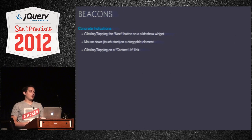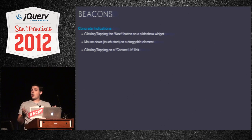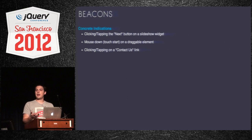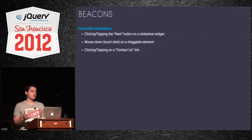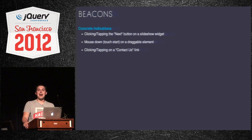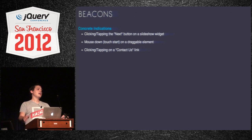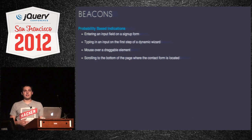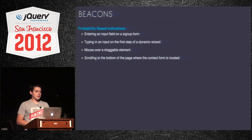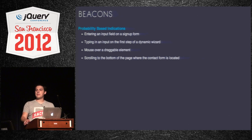These are some concrete beacons: if someone clicked the next button on a slideshow widget, you know they're interacting and expect page two to show up. Mouse down or touch start on a draggable element is an indication they want to drag it. Clicking a contact us link. These are all concrete beacons that say the very next thing that's going to happen is this, and you can anticipate it. Then there are probability-based indications: entering an input field, mousing over a draggable element, scrolling to the bottom of the page — at that point, there's no harm in setting it up.